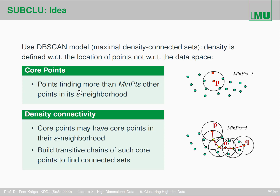In this definition of DBSCAN, the point itself counts toward the neighborhood count. So if there are five points in the epsilon neighborhood of point P, then P would be regarded as a core point. We then have density connectivity, because a core point may find other core points in its epsilon neighborhood. A core point is in the core of a cluster because it's in a dense area, and all points in its epsilon neighborhood should be in the same cluster. Some or all of those points may be core points themselves.